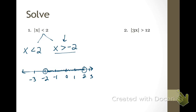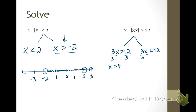For this next one we're going to do the same thing. We have 3x is greater than 12 and 3x is less than negative 12. Now we're not done yet — we need to go ahead and solve these by dividing both sides by 3.